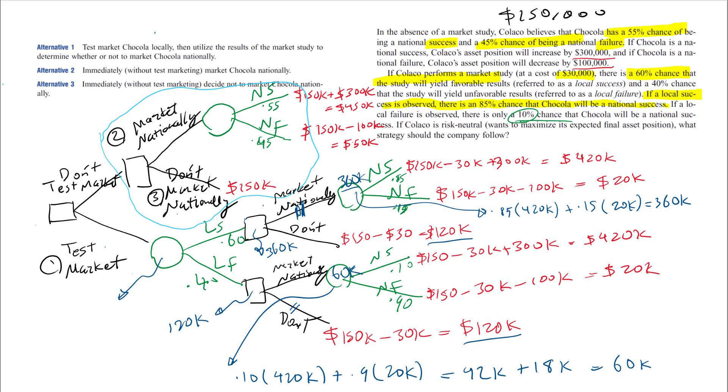Because I picked the largest value, that large value is moved to this square. Now for this event I have two values at the end of each branch and I have probabilities. Now I can calculate the expected value: 0.40 times 120K plus 0.60 times 360K.